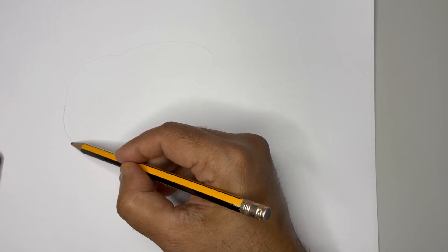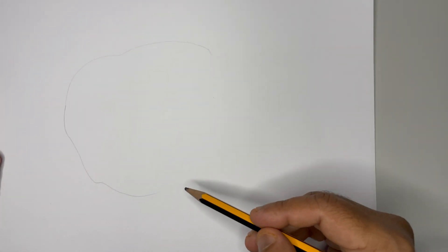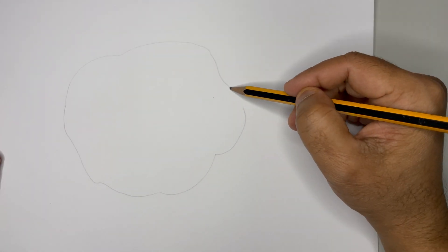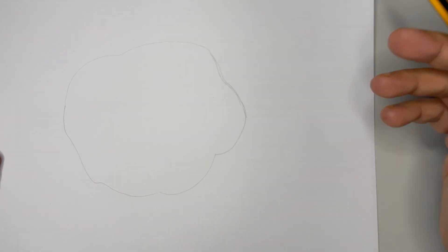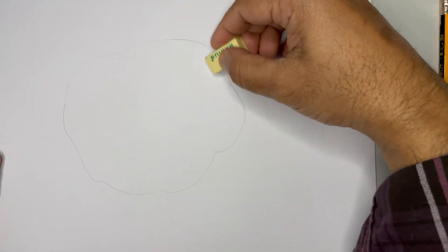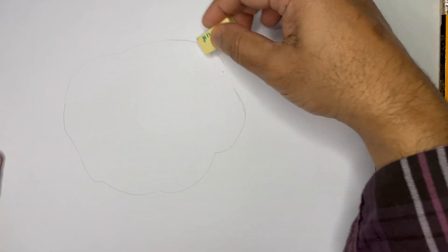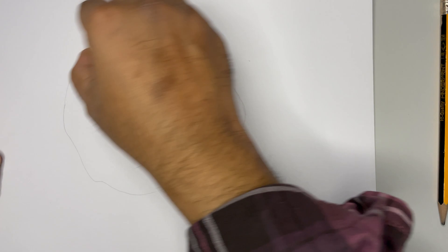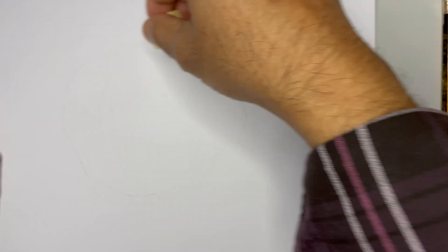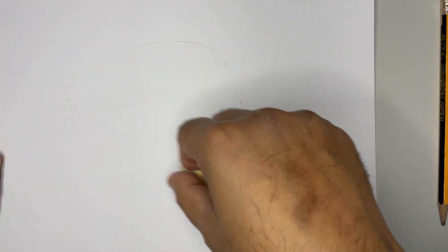So this is the outline on which I'm going to complete my drawing. Once the outline is ready, just rub it so that you can just see the impression only. That's the method we always use.